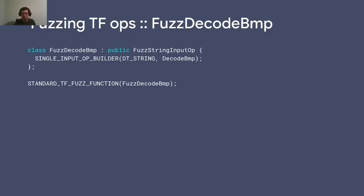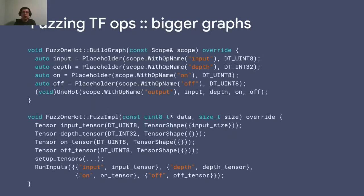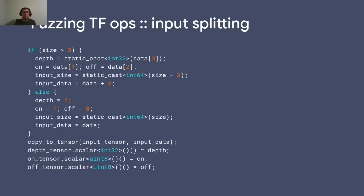We have more complicated examples. If an operation has multiple inputs — for example four inputs: input, depth, on, and off — in BuildGraph I construct placeholders for all of these tensors and call OneHot (the operation being fuzzed) with those parameters. In FuzzImpl, I take the data given by the fuzzer, the random buffer, and split it to fill all four tensors. For splitting the input, we can do it manually: if the buffer size is greater than three, the depth is the first element, the on tensor is the second, the off value is the third, and everything else is the input size. Otherwise we use some constants.